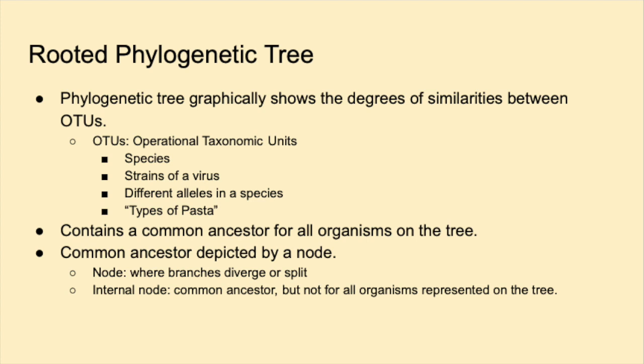OTUs, or operational taxonomic units, can be different species, strains of a virus, or even different alleles within a species. These OTUs are based on differences in DNA sequences. In our case, our OTUs are going to be our types of pasta.